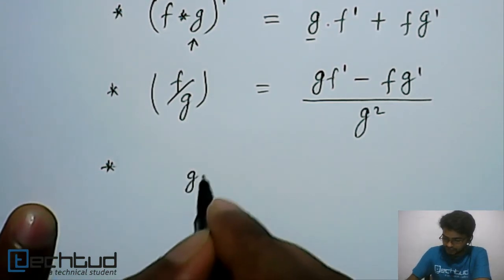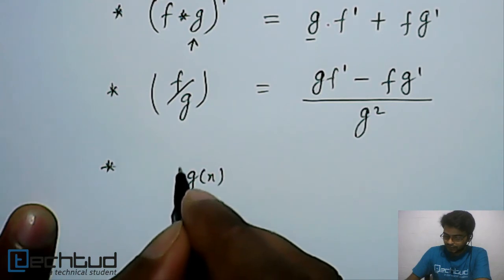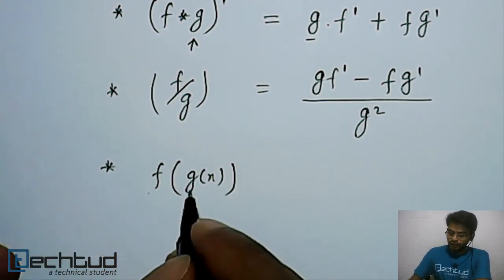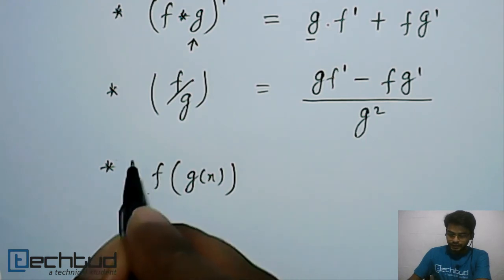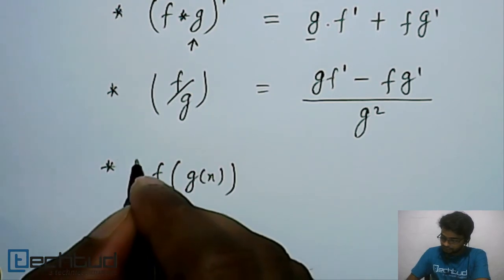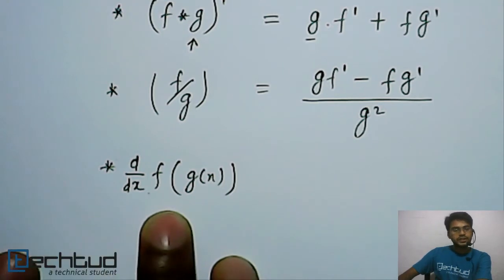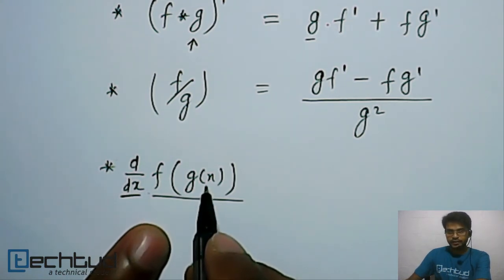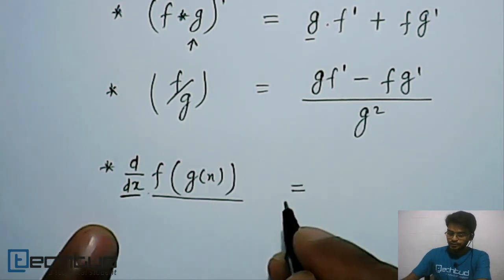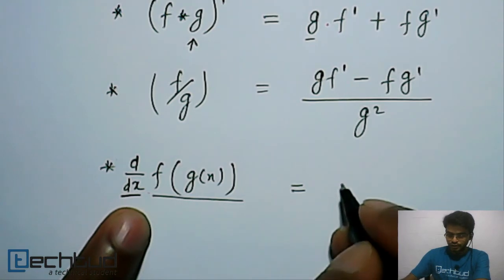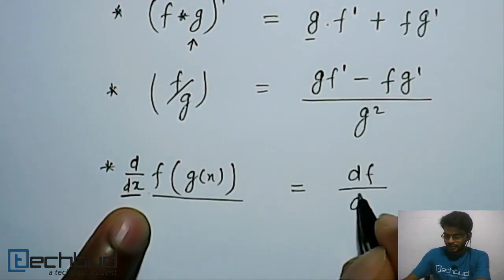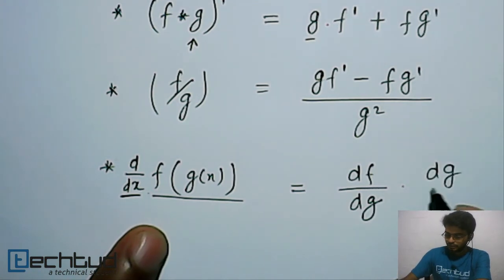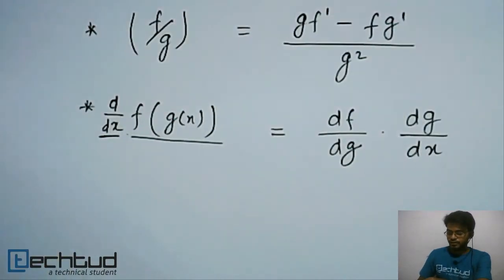Another important one is differentiation of a function with respect to a function — the chain rule. If we have a function g(x) and f is a function of g(x), and we want to find d/dx of f(g(x)), we differentiate f with respect to g first — that is df/dg — and then multiply by the derivative of g with respect to x — dg/dx.